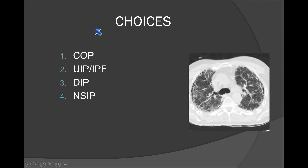COP, DIP, and NSIP are in the differential, but DIP tends to be very air-spacey without much honeycombing, and NSIP doesn't usually show honeycombing. When you see basilar honeycombing, it's usually IPF/UIP.